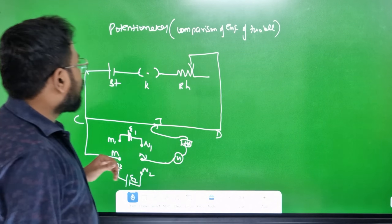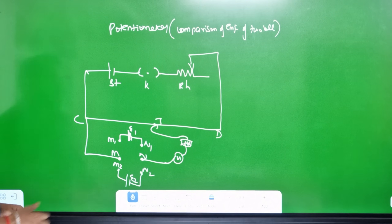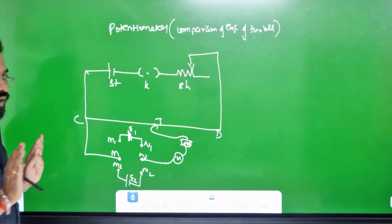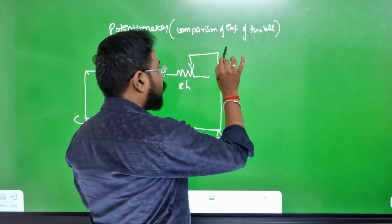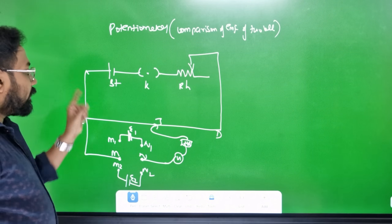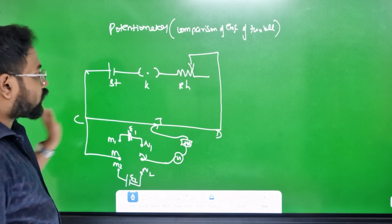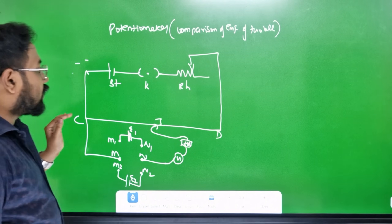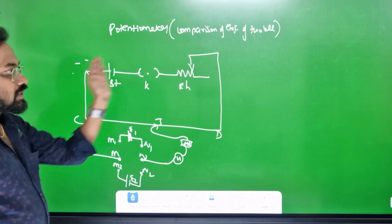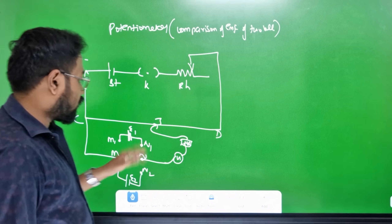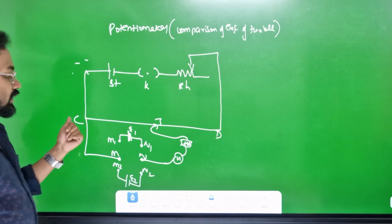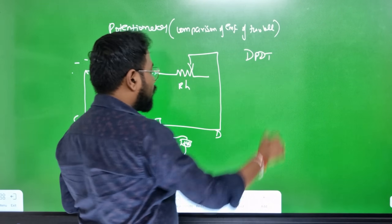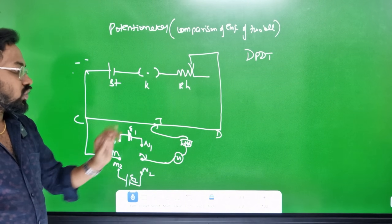For construction: battery, key, and rheostat are connected in series to the terminal. The battery is connected to C and the rheostat is connected to D. C and D form the potentiometer wire, making the primary circuit. C is connected to the M terminal of the DPDT switch. The N terminal is connected to the galvanometer, high resistance S, and jockey, forming the secondary circuit.